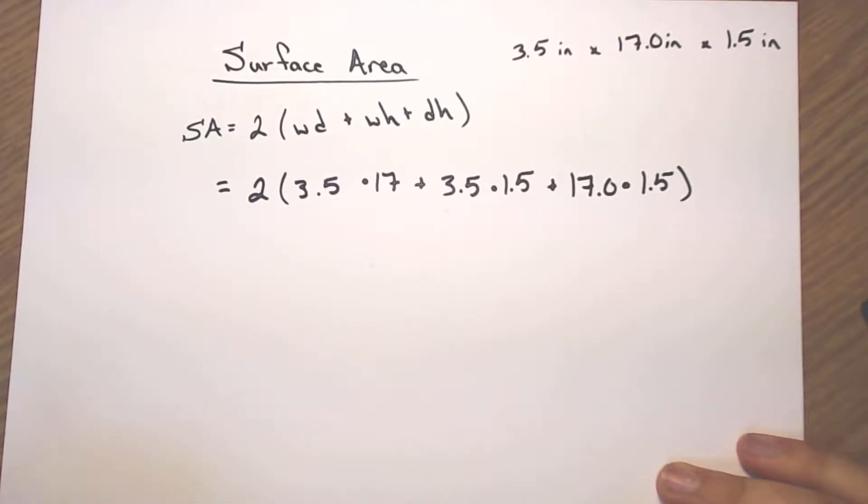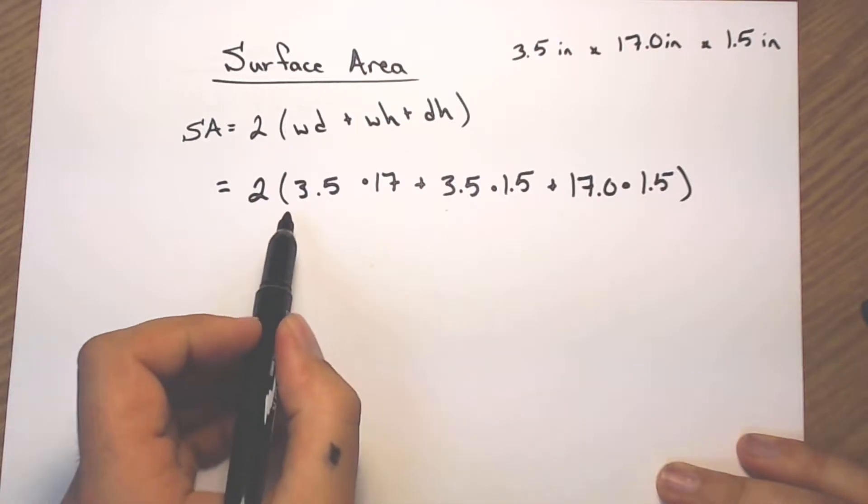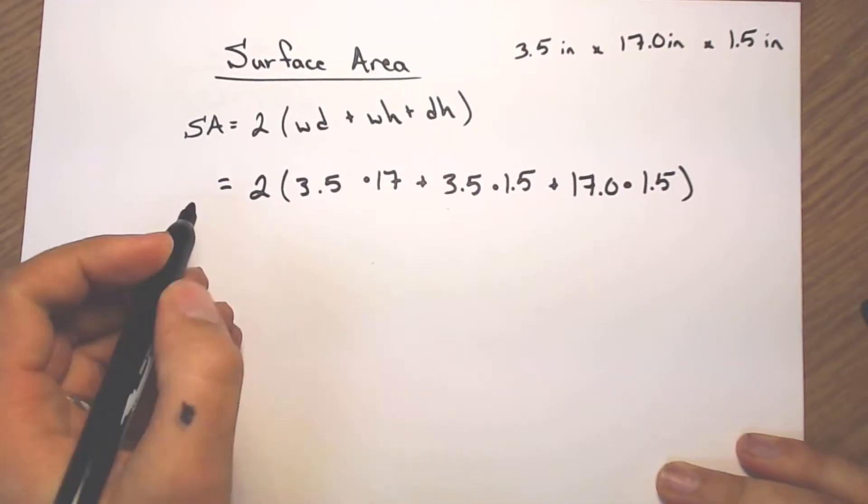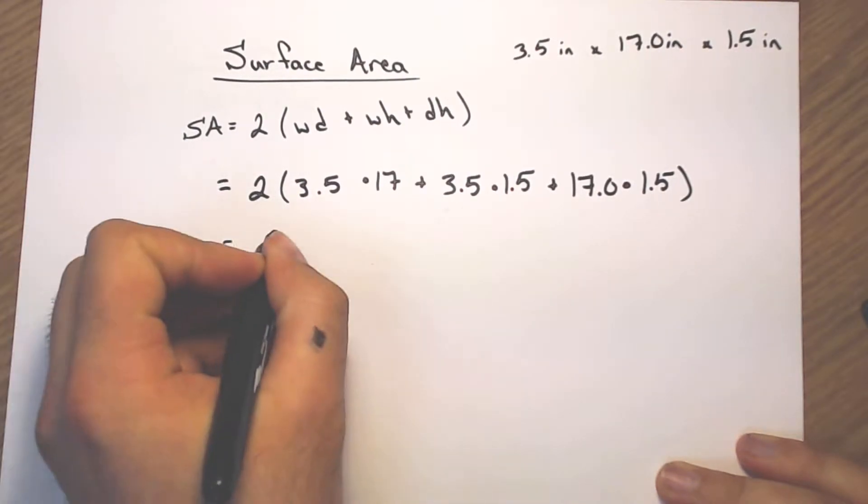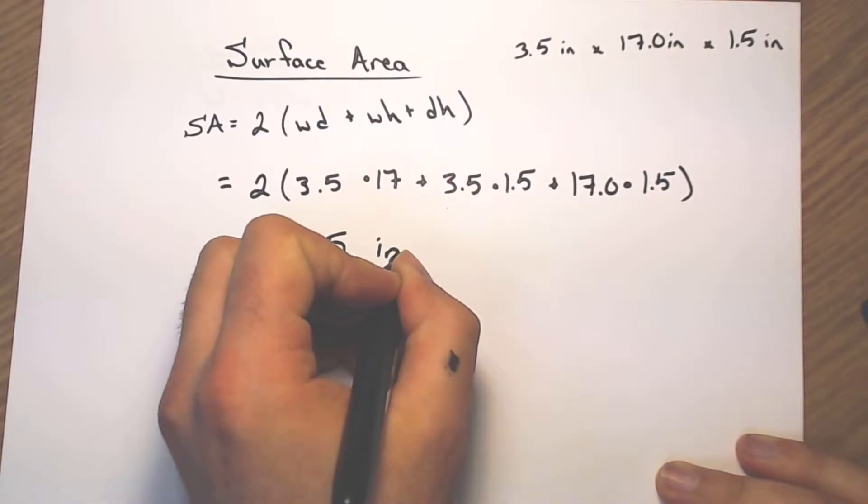Now I have all of those little pieces plugged in. I set all of this, making sure I'm typing it all in my calculator inside a set of parentheses. Then I multiply by the 2. When I do that, I end up with 180.5 inches squared.